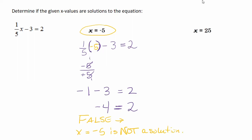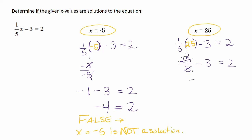Now let's try x equal to 25 and see what we get. First, rewrite the equation with parentheses instead of x, then plug in positive 25. If it helps, you can rewrite this as 25 divided by 5 minus 3 equal to 2, which gives us 5 minus 3 equal to 2. And 5 minus 3 is 2 — is 2 equal to 2? Yes, it is. True statement. So x equal to 25 is a solution to the equation 1/5x minus 3 equal to 2.